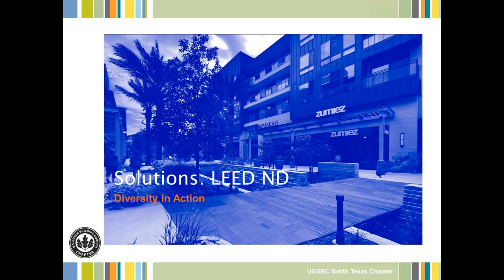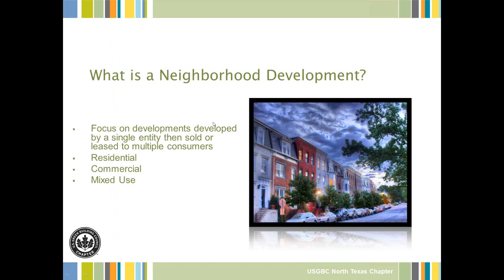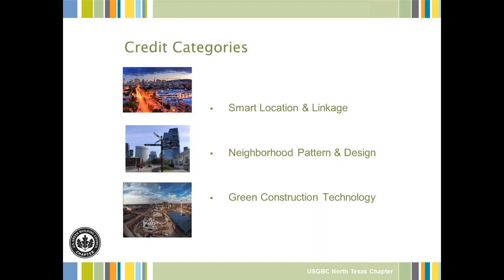So what are the solutions that LEED ND is proposing? They define a neighborhood development as anything roughly 3 acres to 300 acres. They've even used single buildings — just a mixed-use type of structure. It can be all commercial, all residential, or mixed-use. The credit categories, as mentioned before, are smart location and linkage, neighborhood pattern and design, and green construction and technology — breaking back into the National Resources Defense Council, the Congress for New Urbanism, and the USGBC.